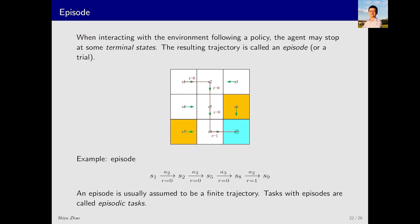The next important concept is episode. An episode is accompanied by what is called a terminal state. We did not explicitly mention this earlier, but it was implicitly included. That is, when I start here and eventually follow this trajectory to here, then I stop. This is a trajectory we discussed earlier. This trajectory eventually comes to an end. Such a trajectory is also called an episode, or sometimes a trial. An episode is usually assumed to be finite, and tasks with episodes are called episodic tasks.